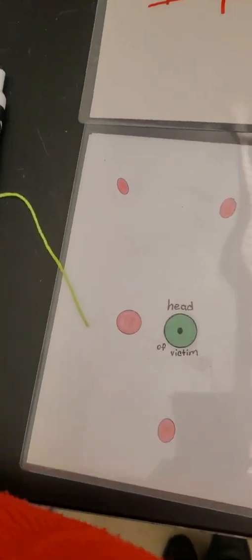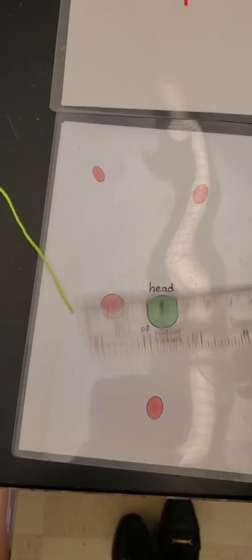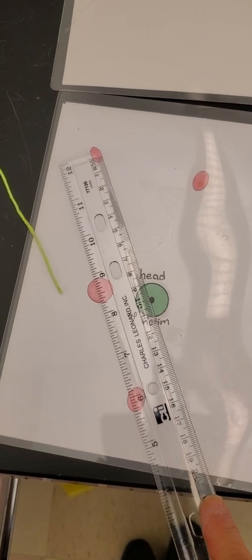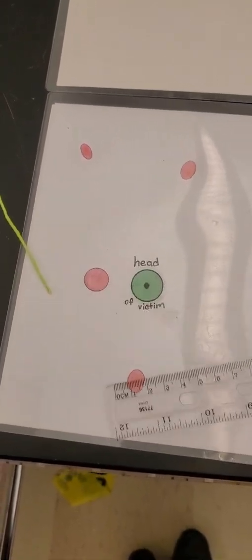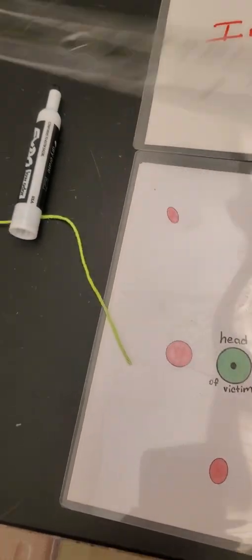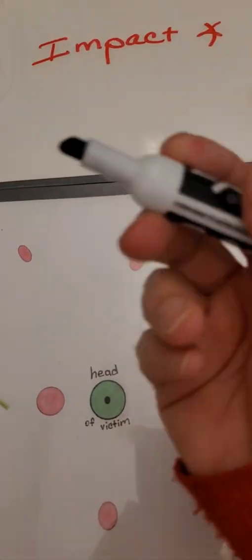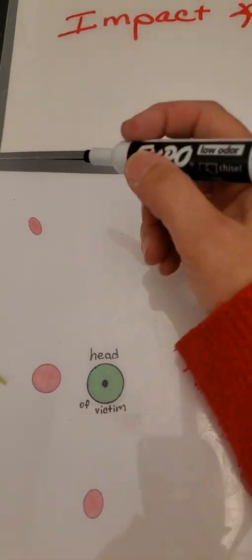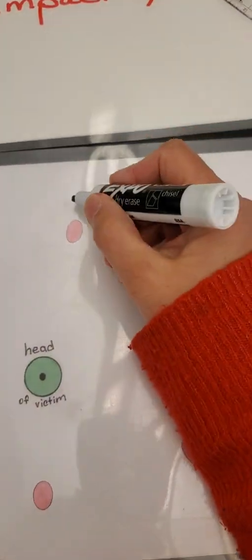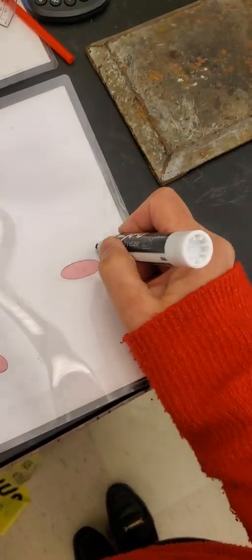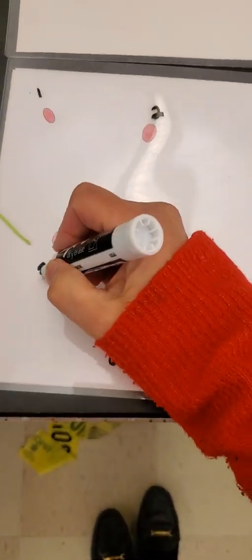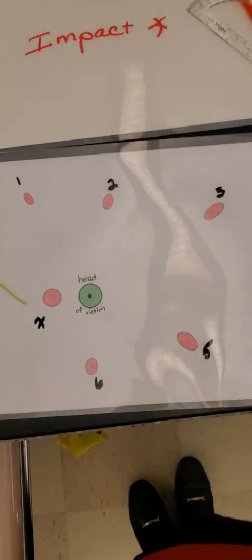You can start by measuring the length from each spatter to the head, and you can do that from the beginning. To help with that, you can take your expo marker and number the blood spatters — it doesn't really matter which one is one or two, however you want to start. I'm going to number them here: one, two, three, four, five, six, and seven.